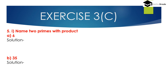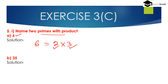Question number 5: name the 2 prime numbers whose product is 6. We can write 6 as 2 multiplied by 3. Here 2 is a prime number and 3 is also a prime number. So both 2 and 3 are prime numbers, and 6 equals 2 multiplied by 3 — that is, 6 is the product of 2 primes: 2 and 3.